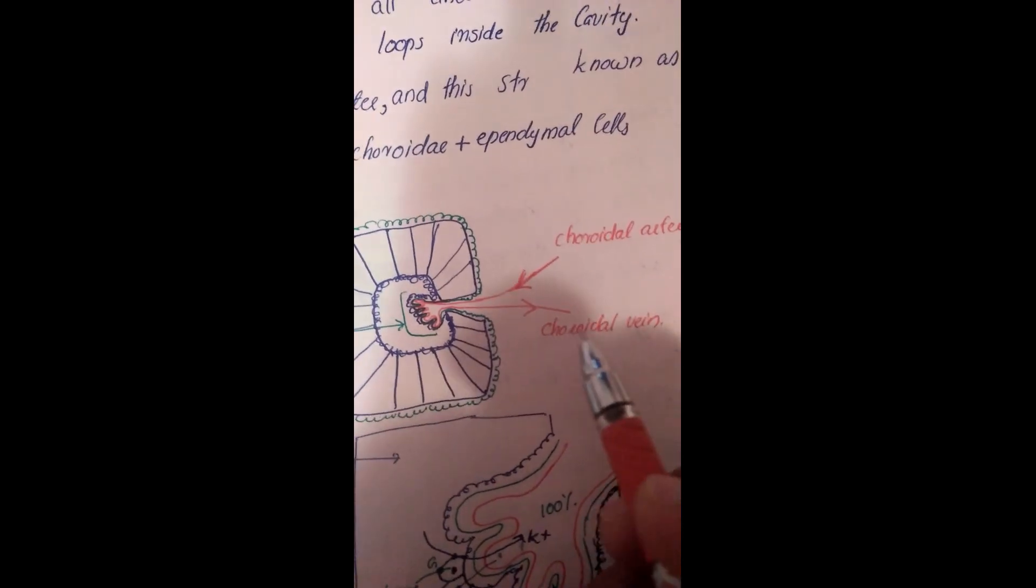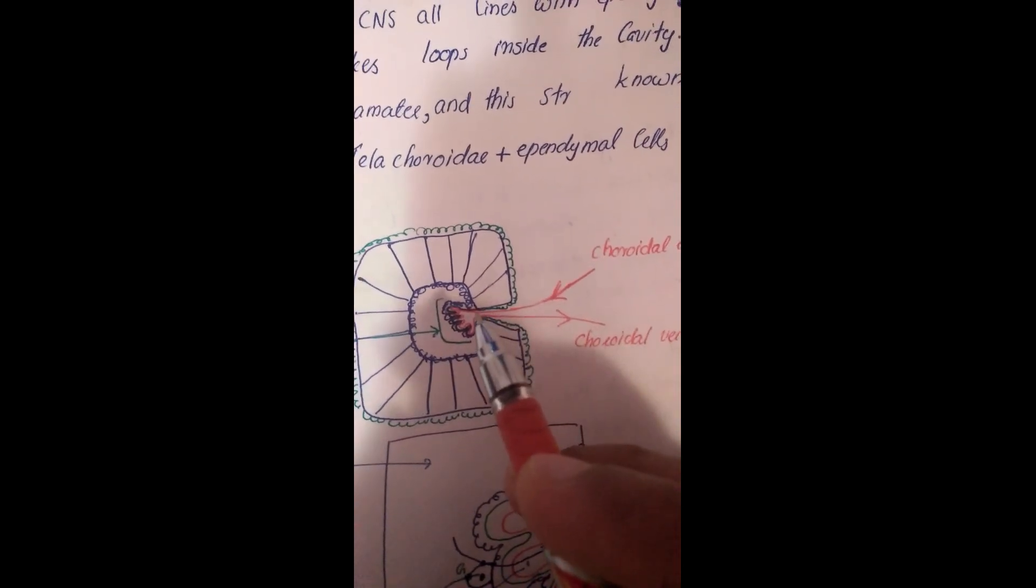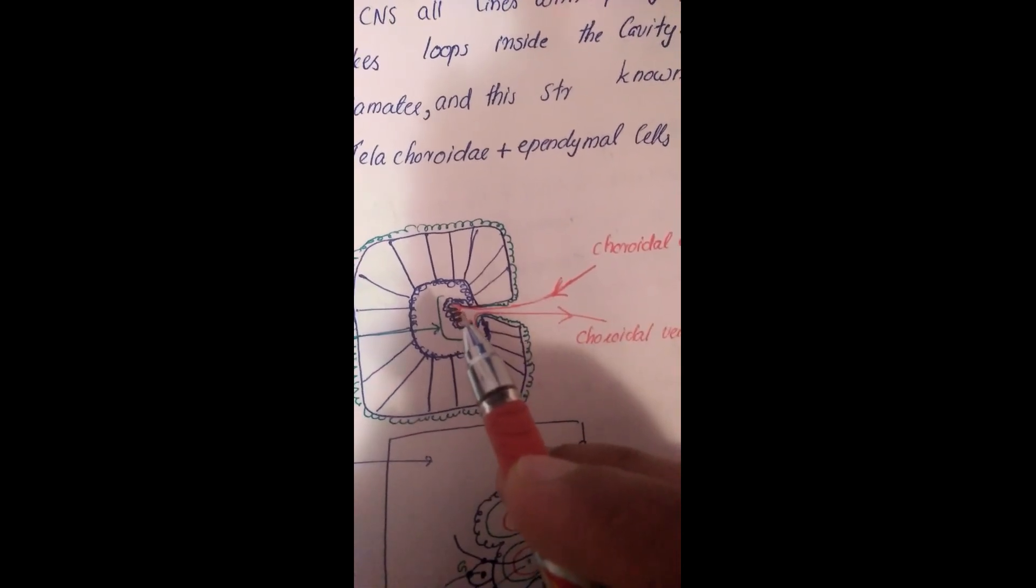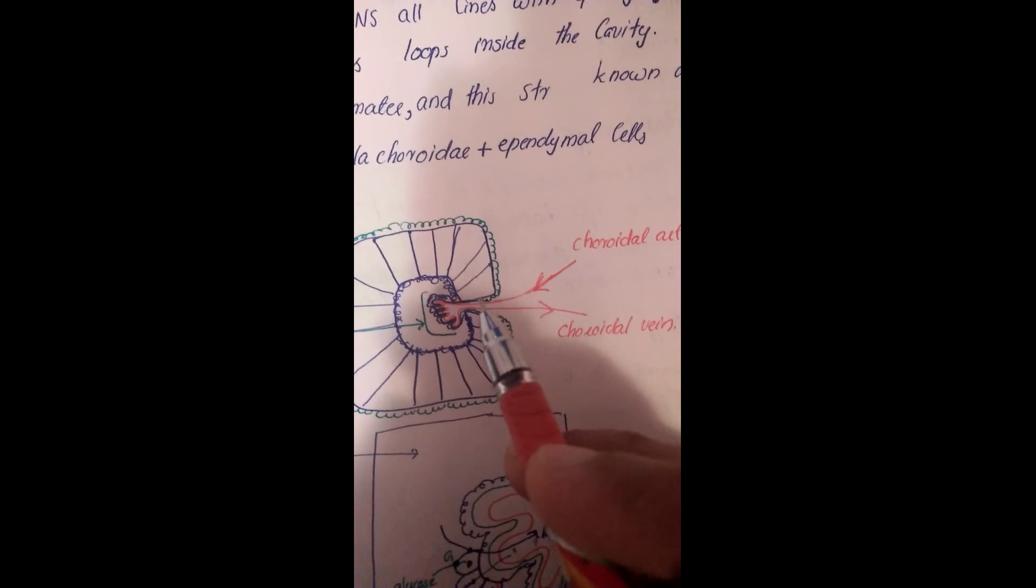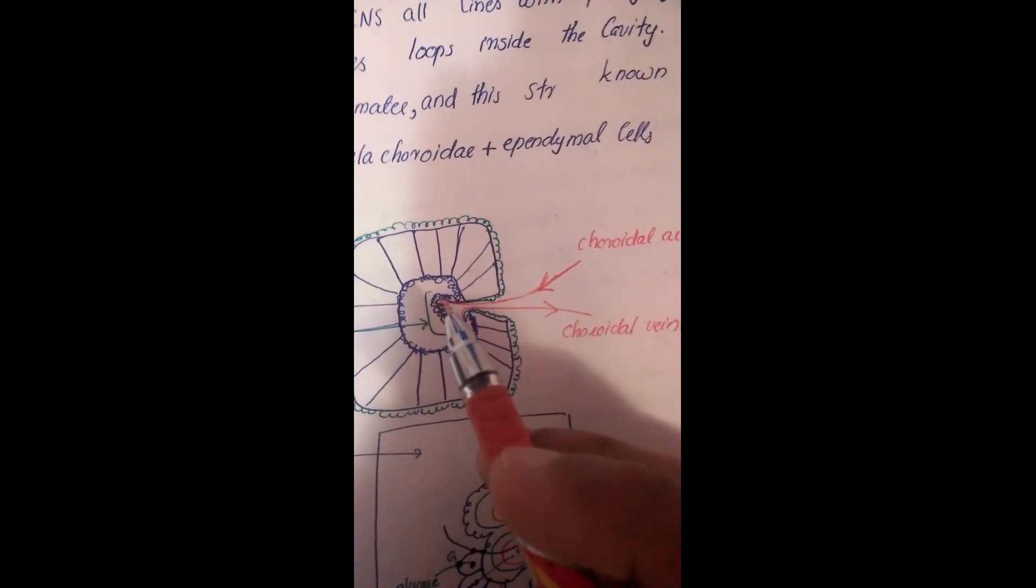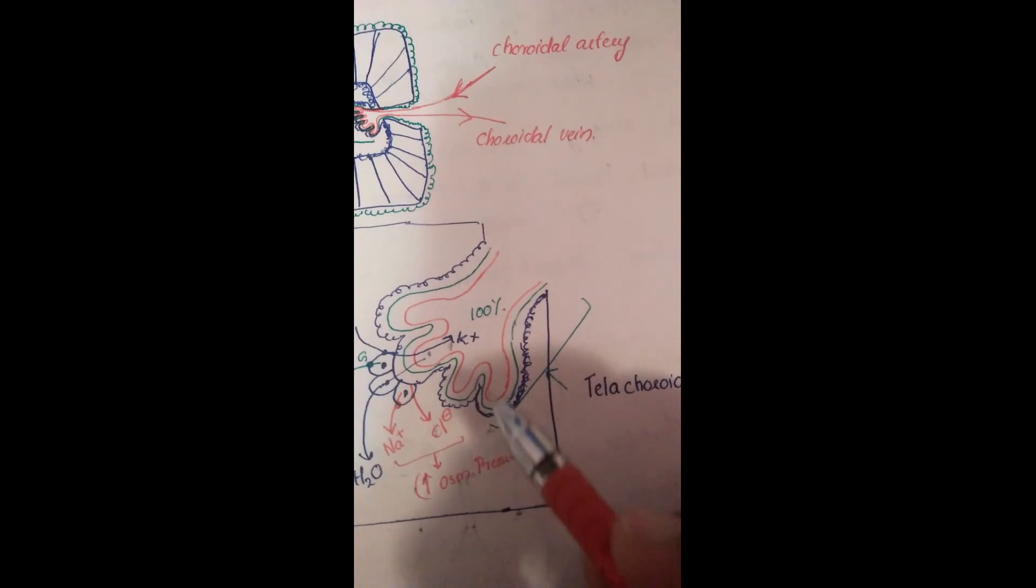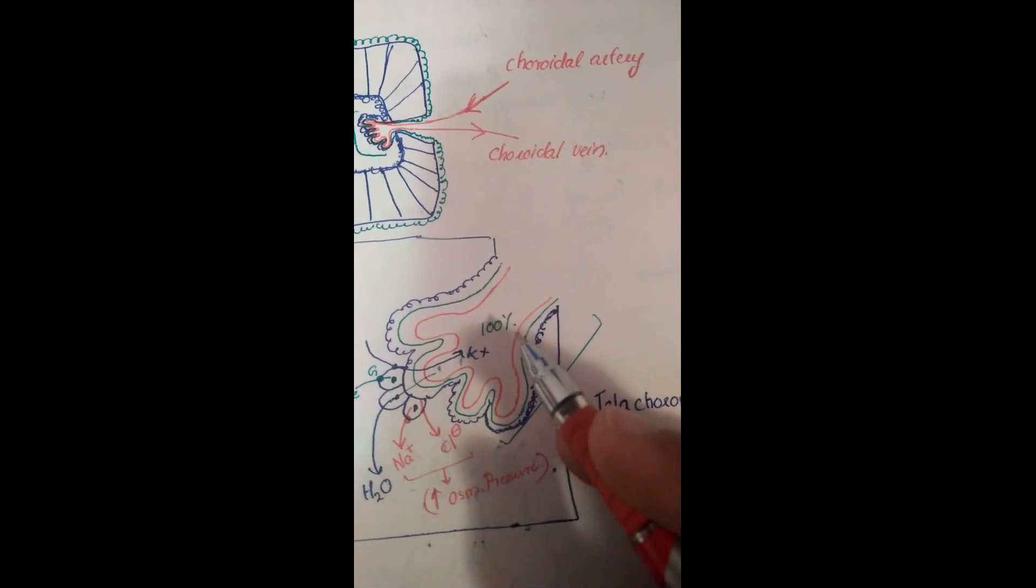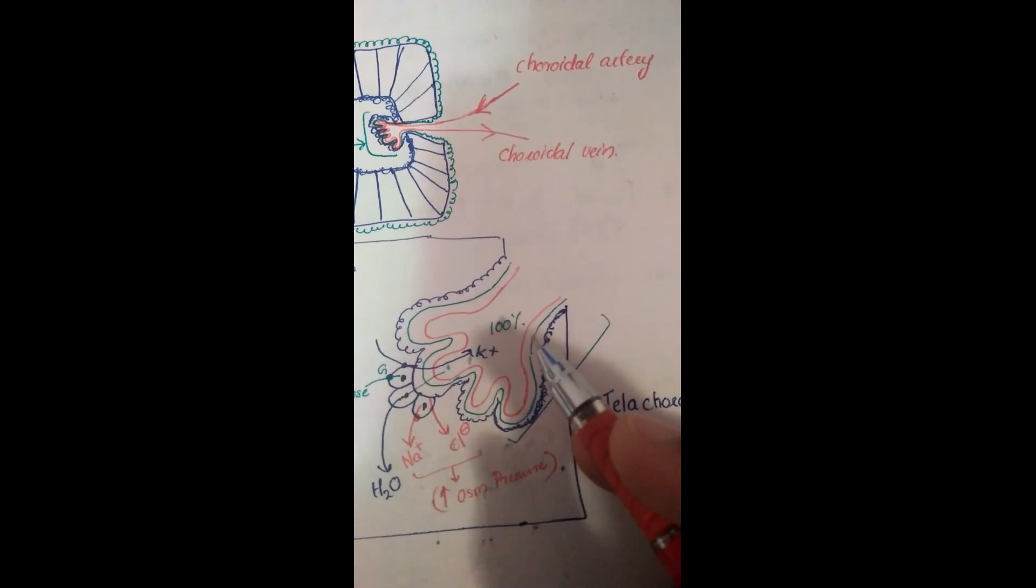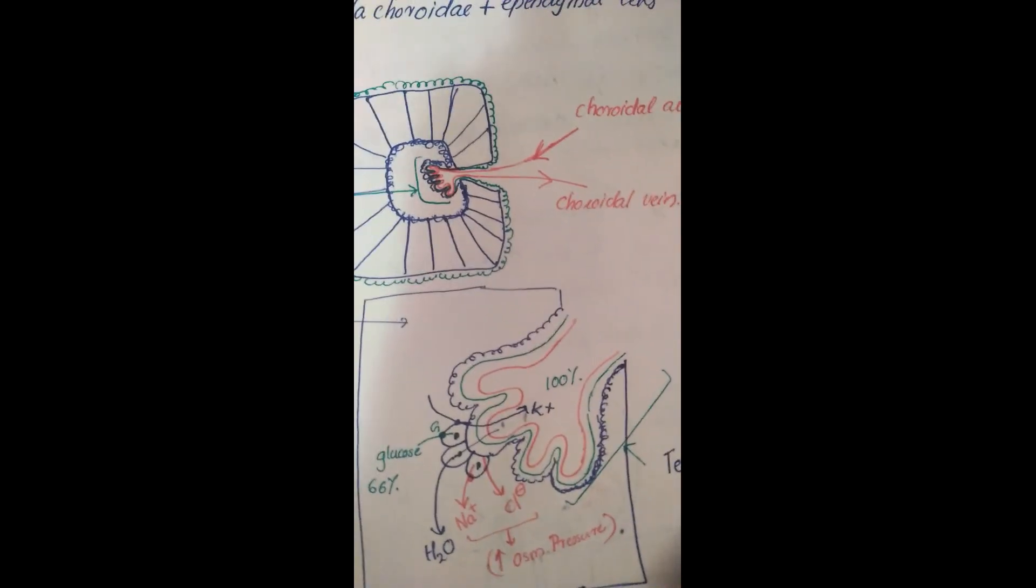Here is the choroidal artery and choroidal vein. The choroidal artery comes into the ventricle and makes a loop. Along with this choroidal artery, the fold of pia gets inside and forms a structure known as tela choroidea. The tela choroidea is formed by the choroidal artery and pia but does not include ependymal cells.